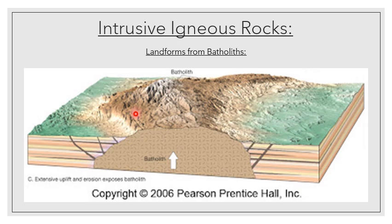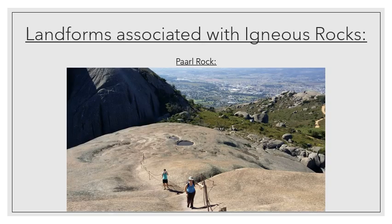So a granitic dome comes from a batholith. I hope you got that. Let's take a look at an example. A very famous example from South Africa would be Paarl Rock in Cape Town, or the Western Cape at least. Here we've got Paarl Rock.